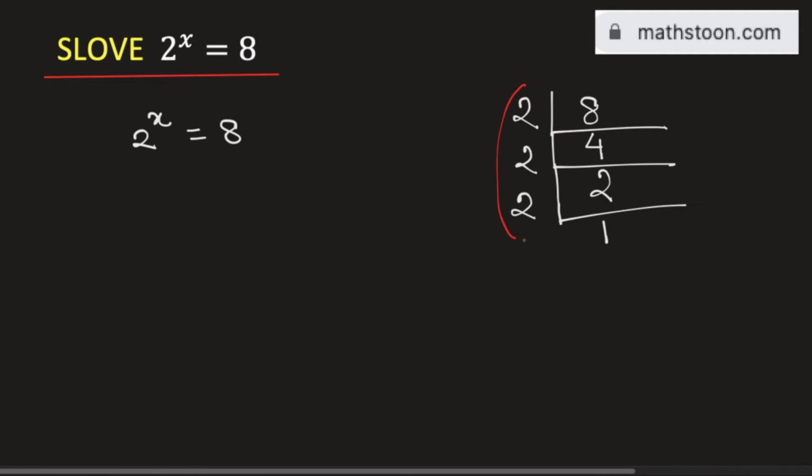Therefore, we can say 8 is the product of these numbers. That is, 8 is equal to 2 times 2 times 2. Since it is a product of three 2's, we can write it as 2 power 3.